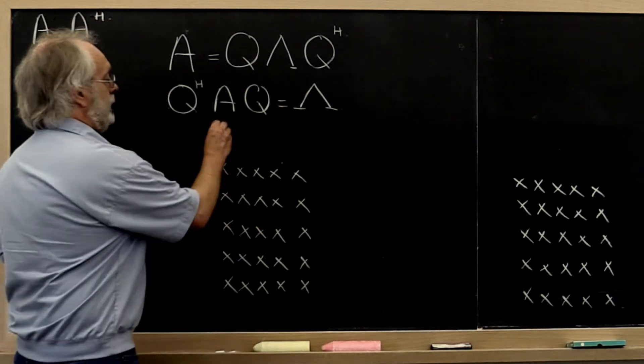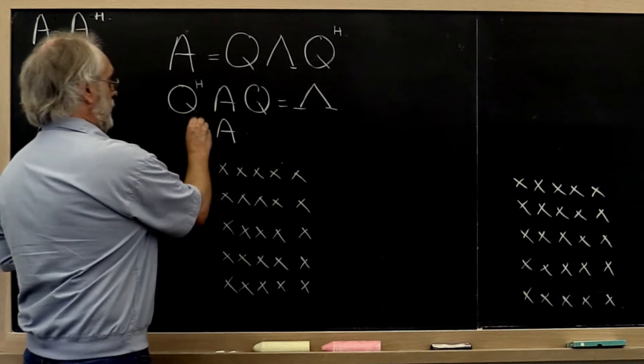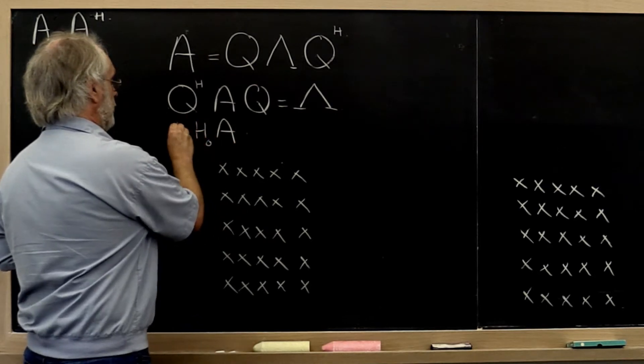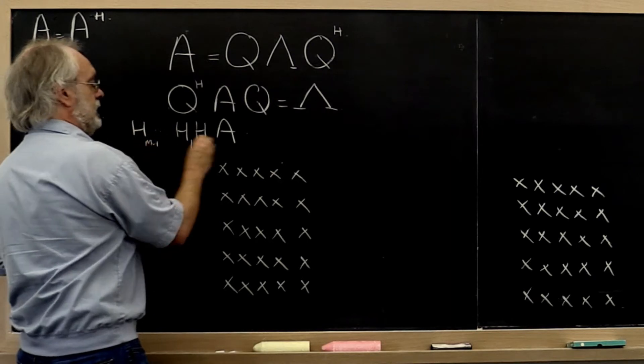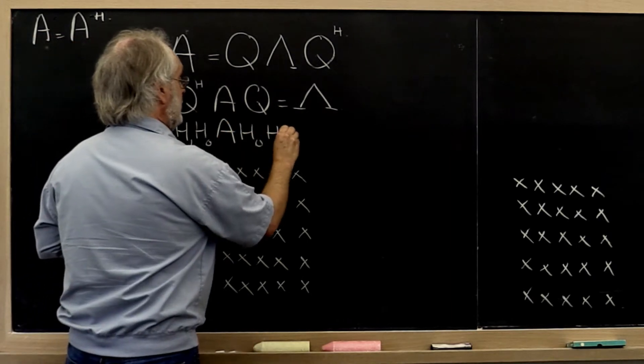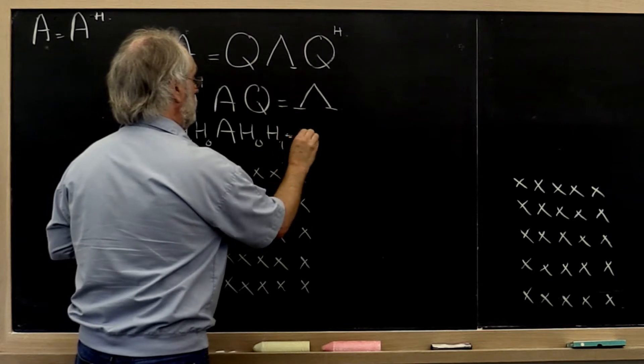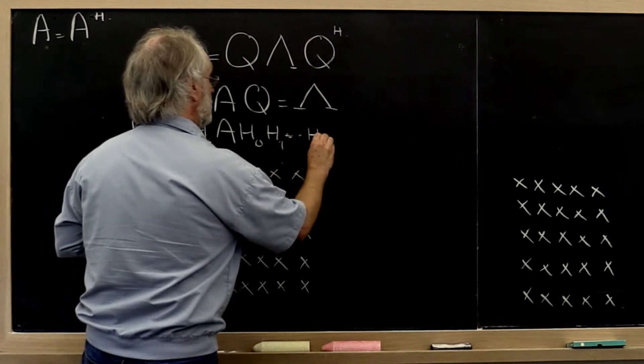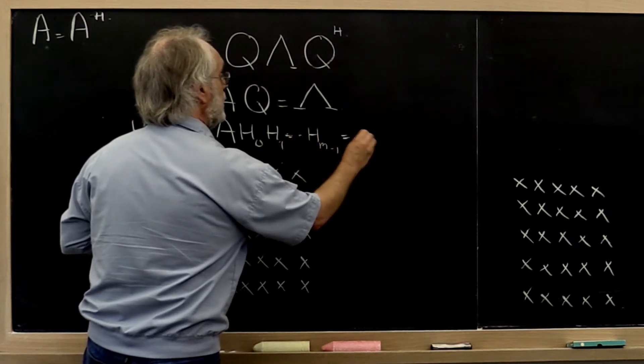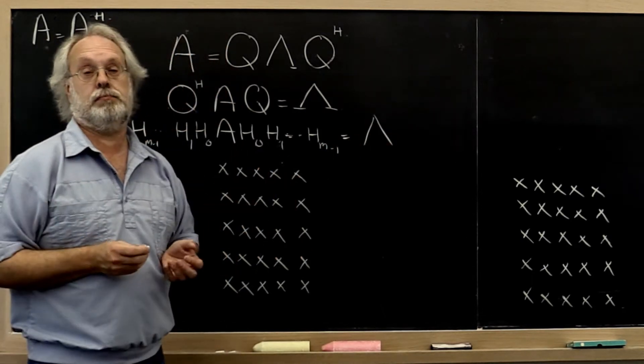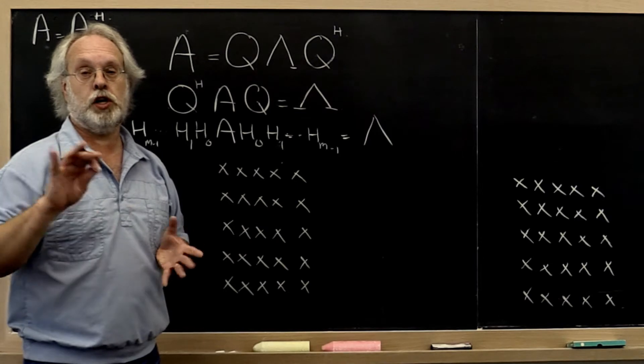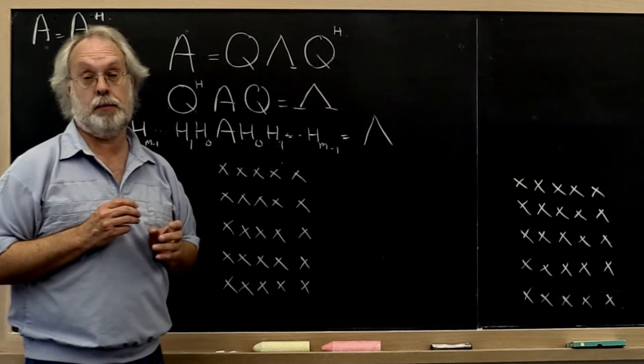What if we similarly compute a sequence of Householder transformations such that the net result equals this diagonal matrix? It would be nice. Well, we're going to let you think about why inherently that can't happen.